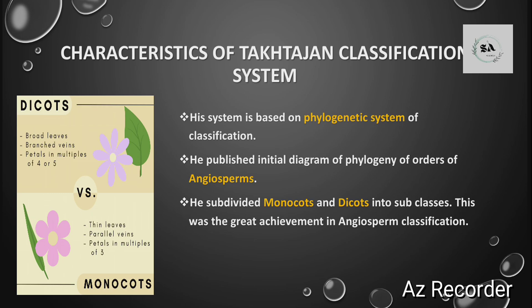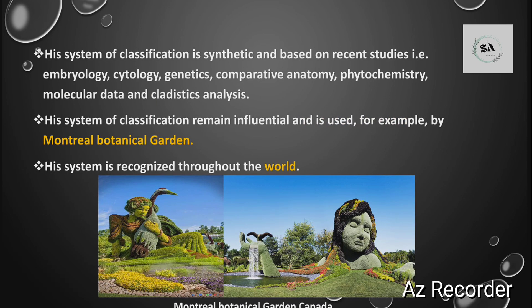Coming to the characteristics of Takhtajan's classification system: first, his system is based on phylogenetic relationships. Second, Takhtajan published the initial diagram of the phylogeny of angiosperm orders. Third, Takhtajan divided monocots and dicots into sub-classes, which was a great achievement in angiosperm classification. Monocots have one cotyledon, thin leaves, parallel veins, and petals in multiples of three. Dicots have two cotyledons, broad leaves, branched veins, and petals in multiples of four or five. This system is also synthetic, based on recent studies, embryology, and cytology.